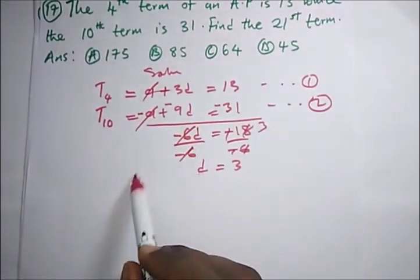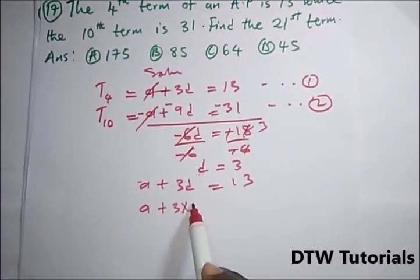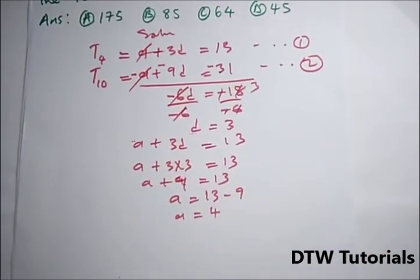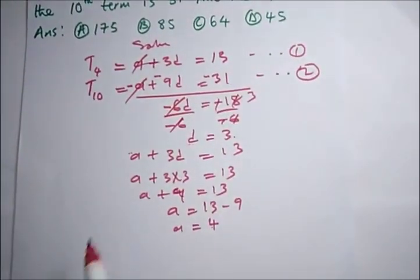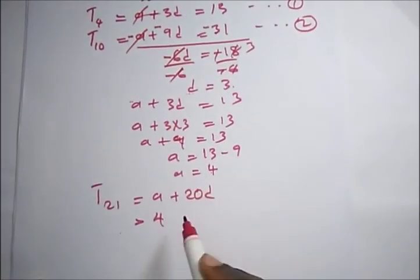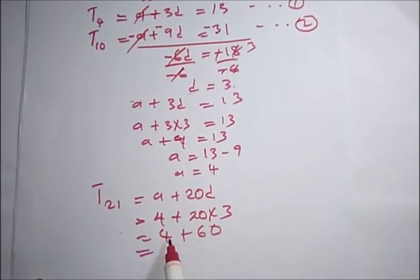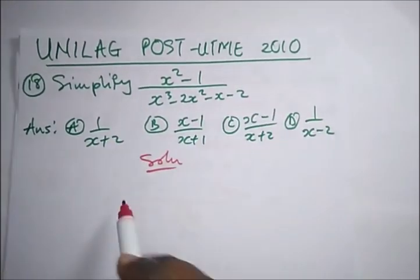Substituting d = 3 into equation one: a + 3(3) = 13, so a + 9 = 13, giving a = 4. To find the 21st term: T₂₁ = a + 20d = 4 + 20(3) = 4 + 60 = 64. The correct option is C.